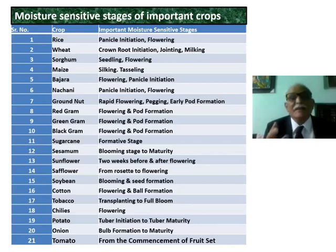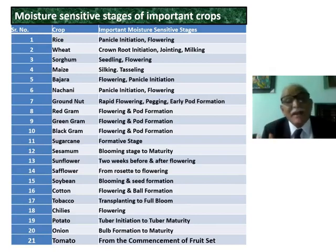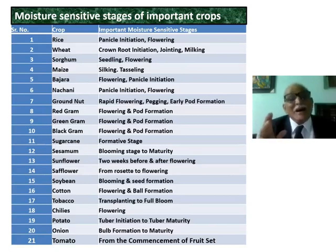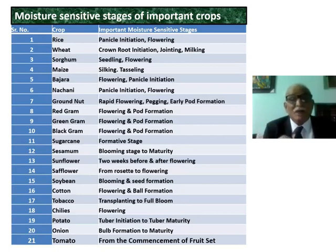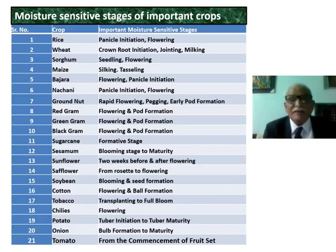For every crop, there are moisture-sensitive growth stages. For rice, it is panicle initiation and flowering. For wheat, it is crown root initiation, jointing, and milking. For sorghum, it is the seedling and flowering stage. For groundnut, it is rapid flowering, pegging, and early pod formation. For red gram, it is flowering and pod formation.